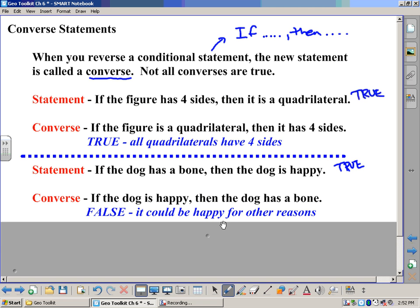It could be happy for other reasons, like for instance, maybe it's going on a walk, maybe the owner is petting the dog, maybe they're chasing a ball. There could be lots of different reasons why that dog is happy. So just because the dog is happy doesn't mean the dog has a bone. That's how converse statements work.